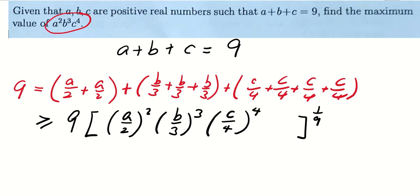So from this inequality, we can divide both sides by 9. So we have 1 is greater than or equals to A power 2 times B power 3 times C power 4 over 2 power 2, 3 power 3, 4 power 4.